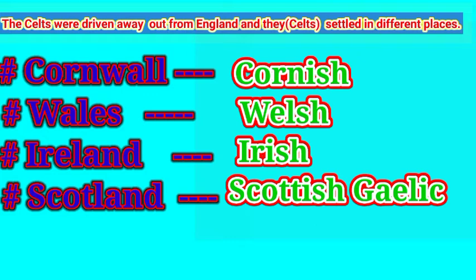The Celts settled in five places: firstly in Cornwall, where the language is Cornish; then Wales, where the language is Welsh; then in Ireland, where the language is Irish; then in Scotland, where the language is Scottish Gaelic. So there should be no confusion about the origin of the name England.